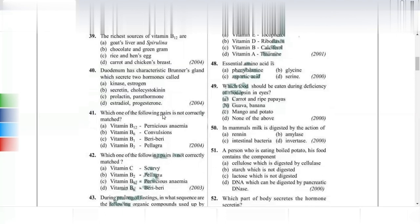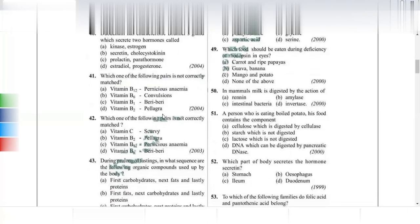The duodenum has characteristic Brunner's glands, which secrete two hormones: secretin and cholecystokinin. For the incorrectly matched pair question — vitamin B12 causing pernicious anemia is correct. However, pellagra is caused by vitamin B3 (niacin), not vitamin B2. That is the incorrect match.